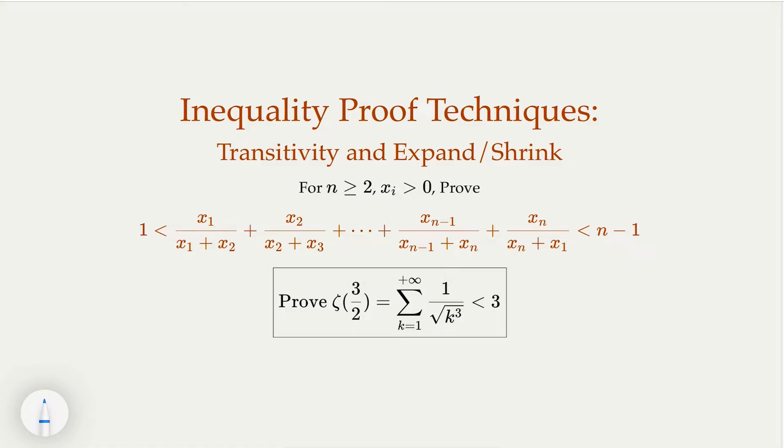We're going to introduce inequality proof techniques. Inequality has the transitivity property, and this technique is about expanding or shrinking one side of the inequality and then trying to prove it. We're going to walk through two examples. The first example involves n positive numbers where we try to prove a summation is between 1 and n minus 1. The second is to prove a summation is less than 3.